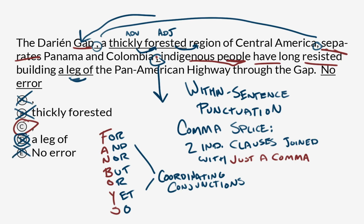We can check off 'no error' because we found the error and it is C. If you're uncertain about a piece of punctuation inside a sentence, do the before-and-after test, especially if you think there might be a comma splice. Before and after the comma, is there an independent clause? If so, and if there's no coordinating conjunction following the comma, then that comma is being used incorrectly. Conversely, if you see a semicolon followed by a FANBOYS conjunction, that's redundant — either get rid of the semicolon and turn it into a comma, or get rid of the conjunction. So if you have doubts about within-sentence punctuation, look both ways before you cross off that option.